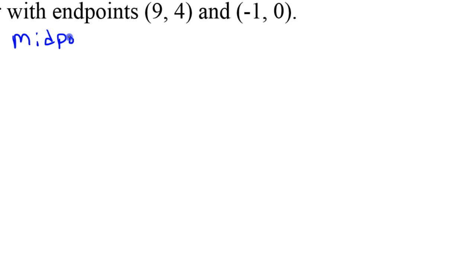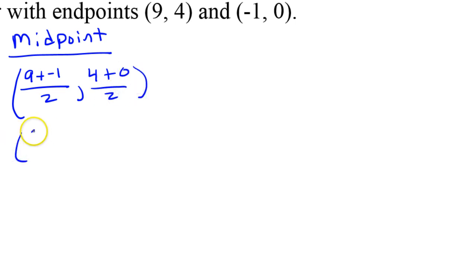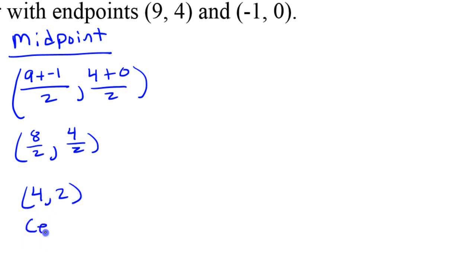So let's find the midpoint right here. We're going to take the average of the x's: (9 + (-1)) / 2. And then we're going to average the y's: (4 + 0) / 2. So that's 8/2 and 4/2, which reduces to (4, 2). So this is the center of the circle.